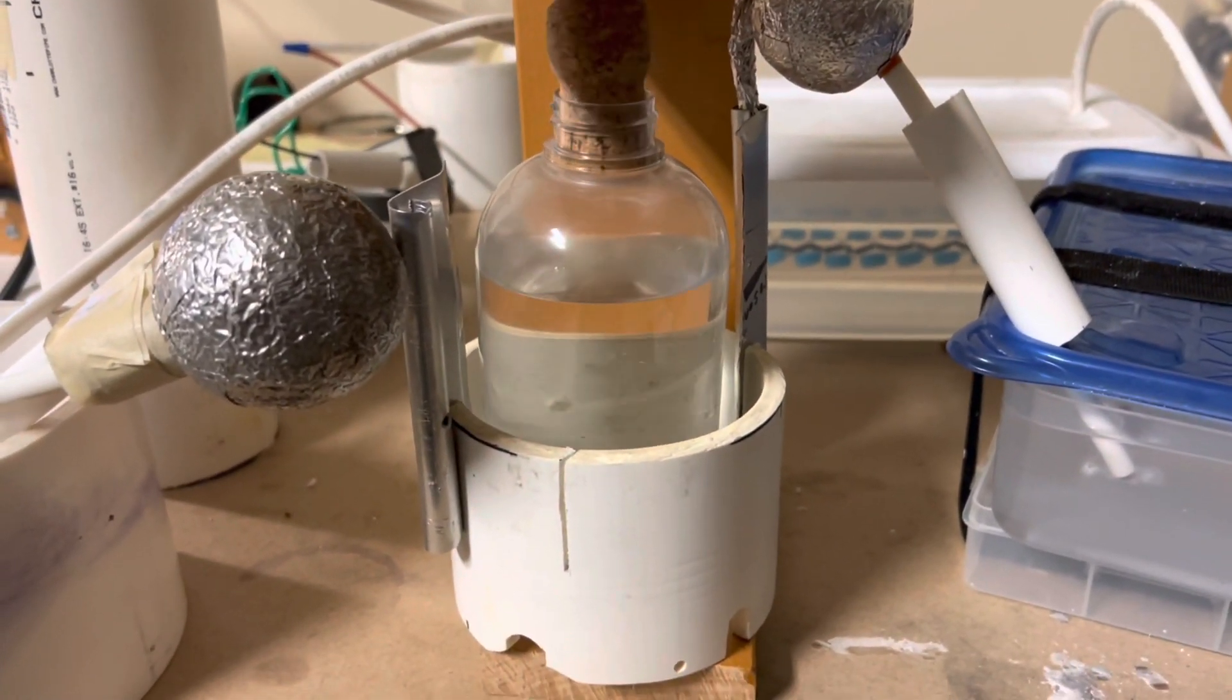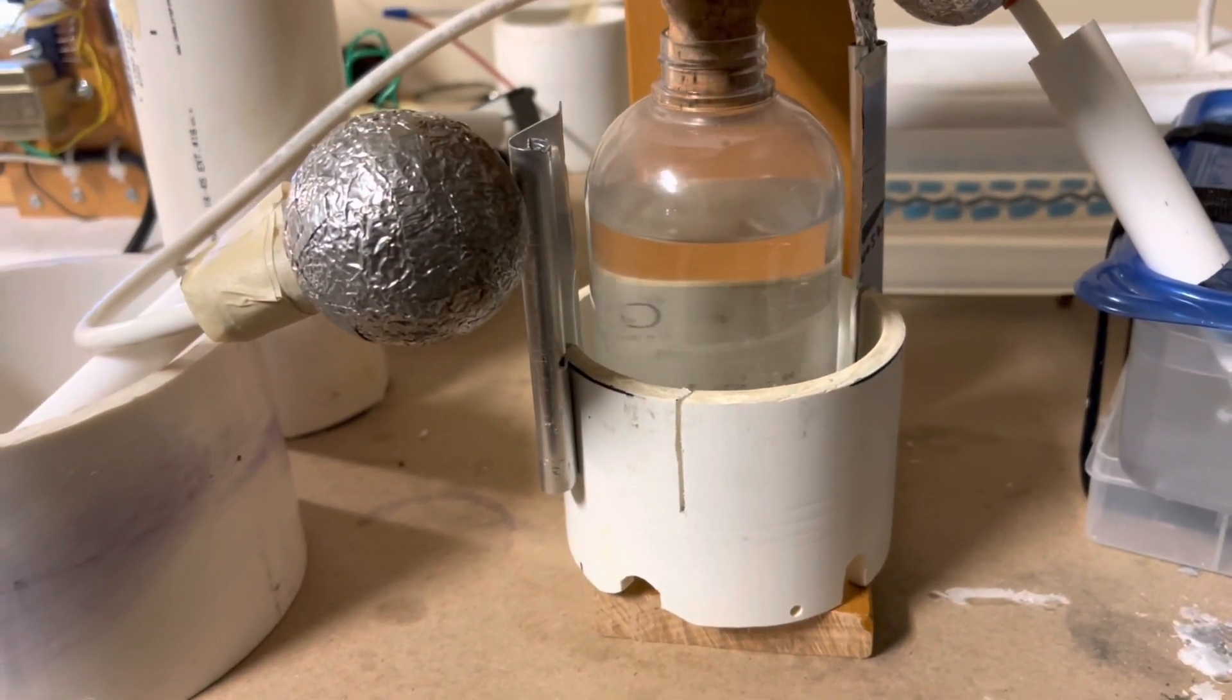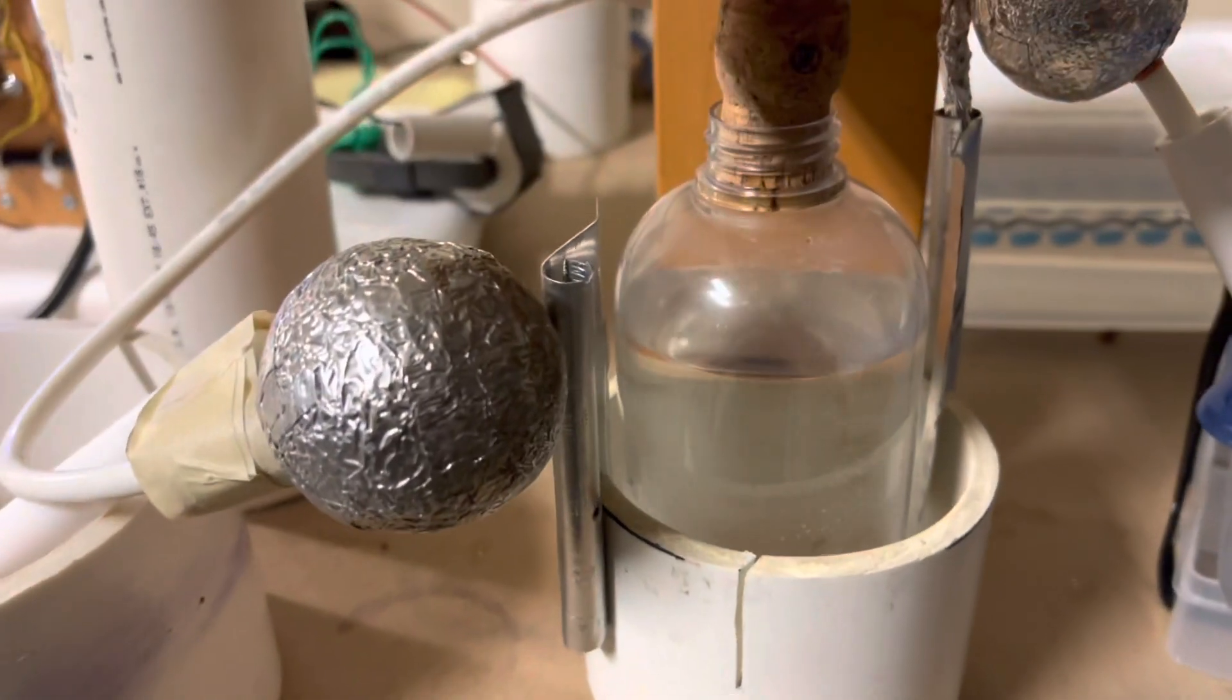We're going to play around with static electricity and use it to turn around a plastic bottle which is going to behave like a corona motor. A simplified form of corona motor is what I'm going to show you.